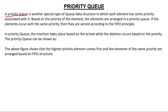In a Priority Queue, each element has a Priority assigned to it, and based on that Priority, we process or delete them from the Queue. Elements with the highest priority are served first, then next, and so on. Elements are arranged in a Priority Queue based on their priority — highest priority comes first, lower priority comes later.